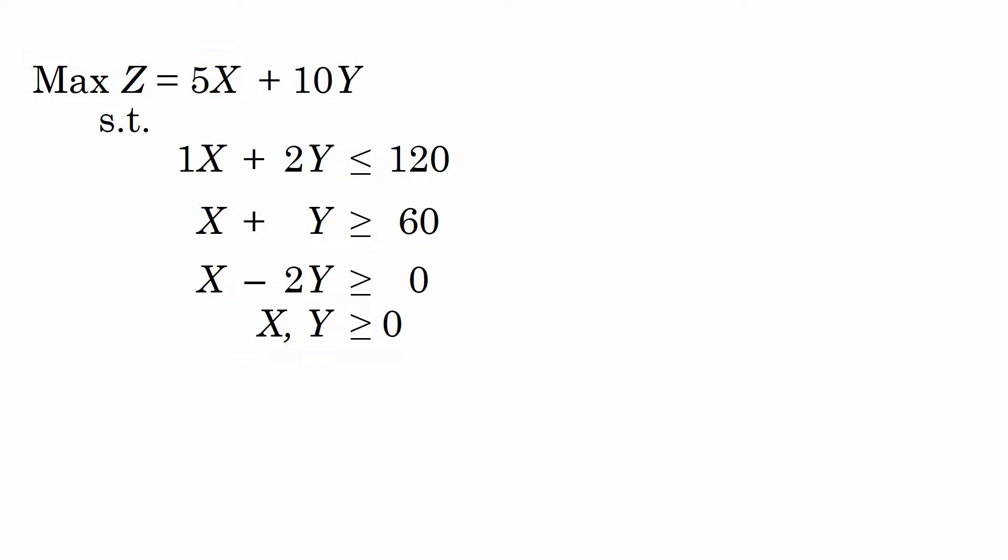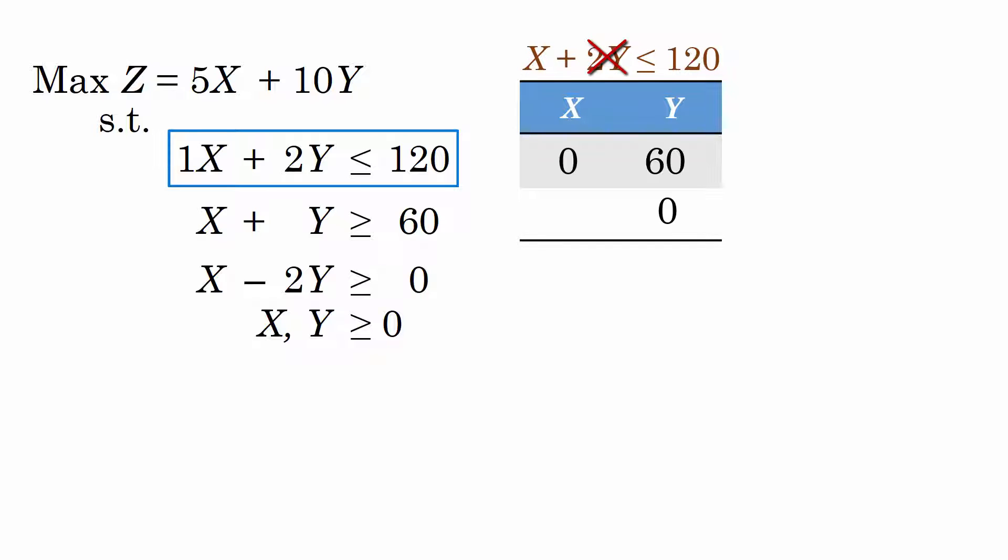Let's begin by finding points for drawing the constraint lines. For the first constraint line, when x is 0, y is 60, and when y is 0, x is 120.